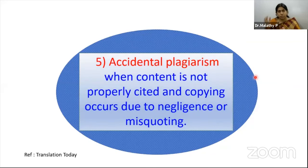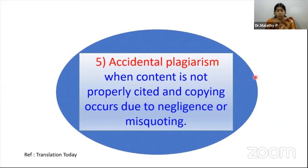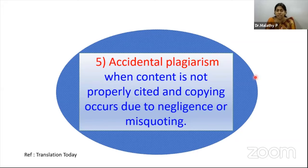Fifth is accidental plagiarism: when content is not properly cited and copying occurs due to negligence or misquoting. Sometimes, unawares, when we have been working on a writer for a long time and are very familiar with their text, we start emulating their style and even their words. Those things can be called accidental plagiarism.